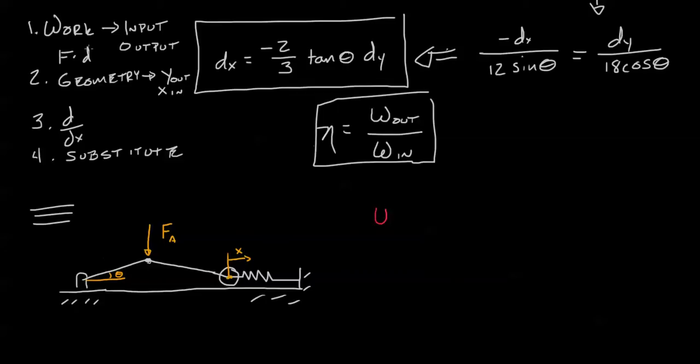What we've been looking at is work. The work in equals the work out. However, work and energy, they're pretty much the same, just a different way of seeing the same thing. The energy, the potential energy in a spring is one half kx squared.